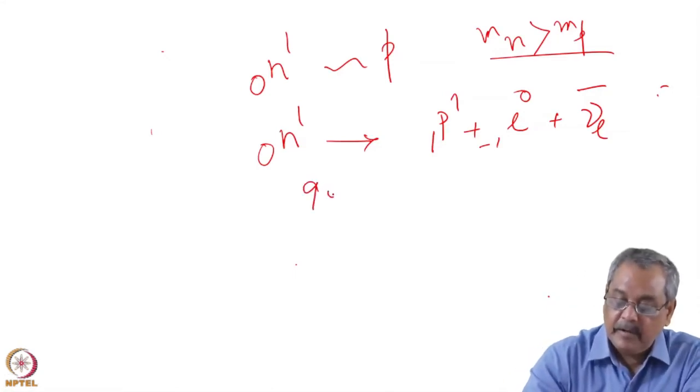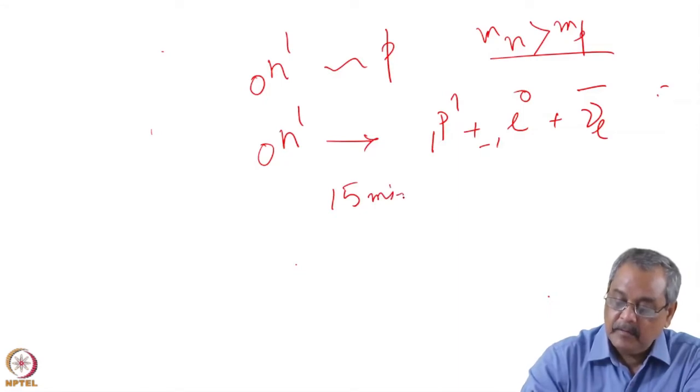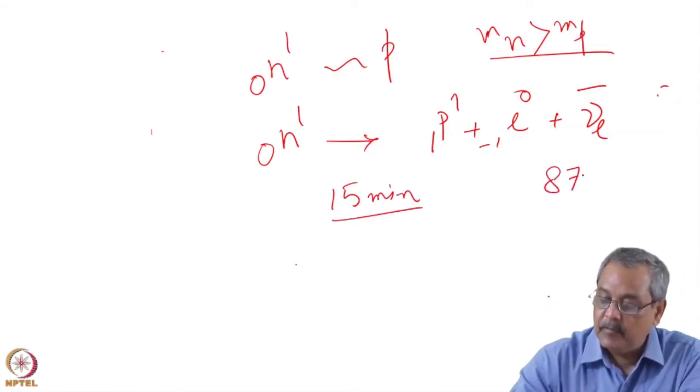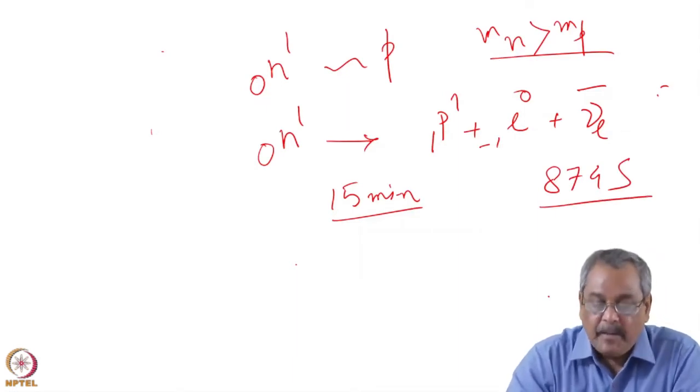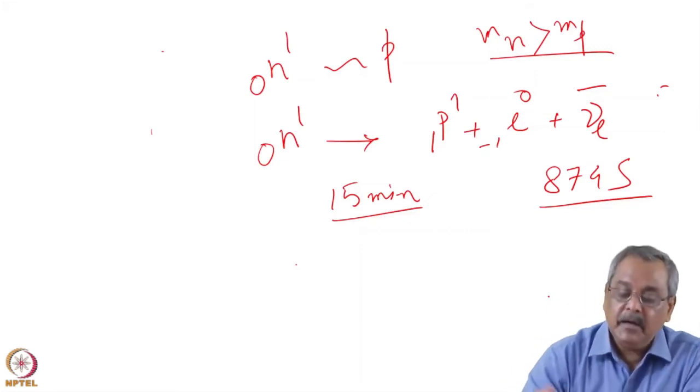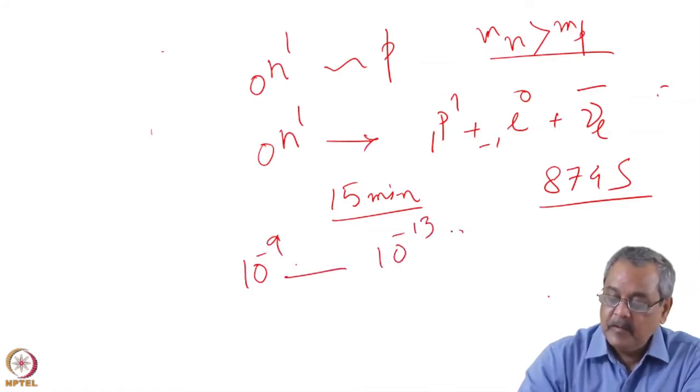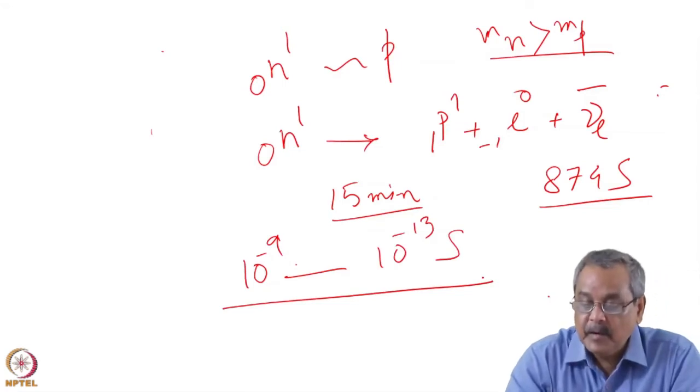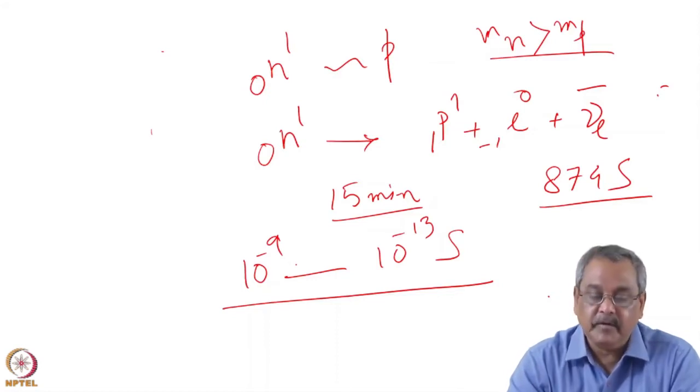This is what happens but the lifetime is quite long. Actually, free neutron lifetime is around 15 minutes, more accurately it's around 874 seconds. So this time is much longer compared to the time scale that we measure in neutron scattering. Typically, let us say 10 to the power of minus 9 to 10 to the power of minus 13 seconds. For all practical purposes, all the experiments that we do using thermal neutrons, cold neutrons or epithermal neutrons, we can consider the neutrons as stable particle for these experiments.